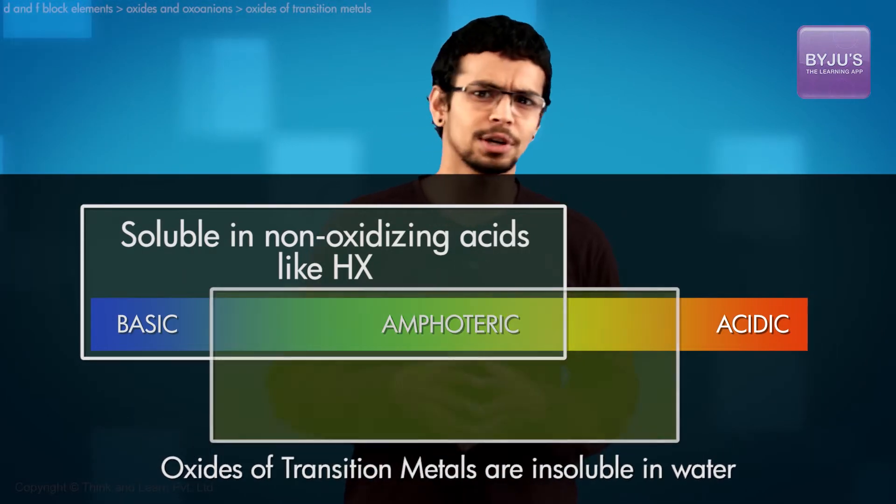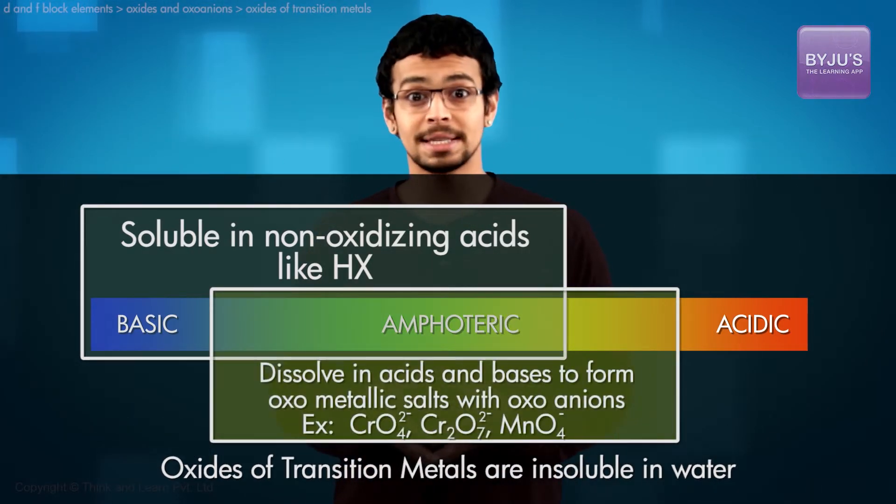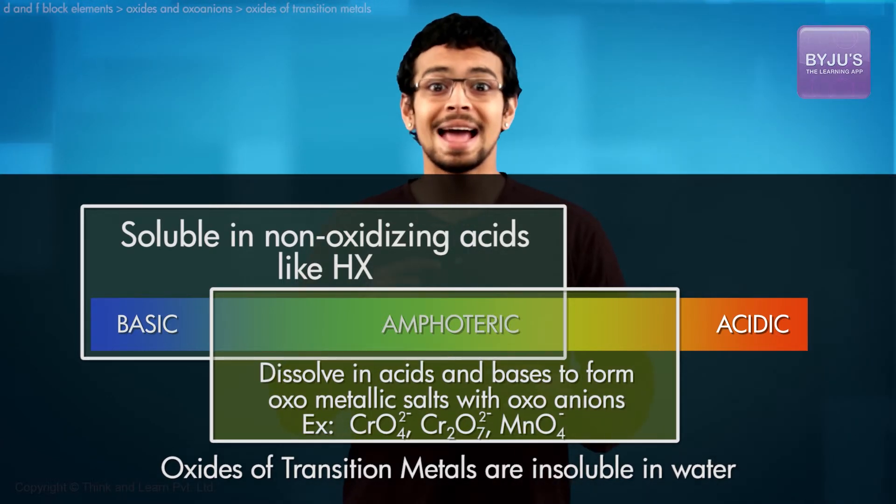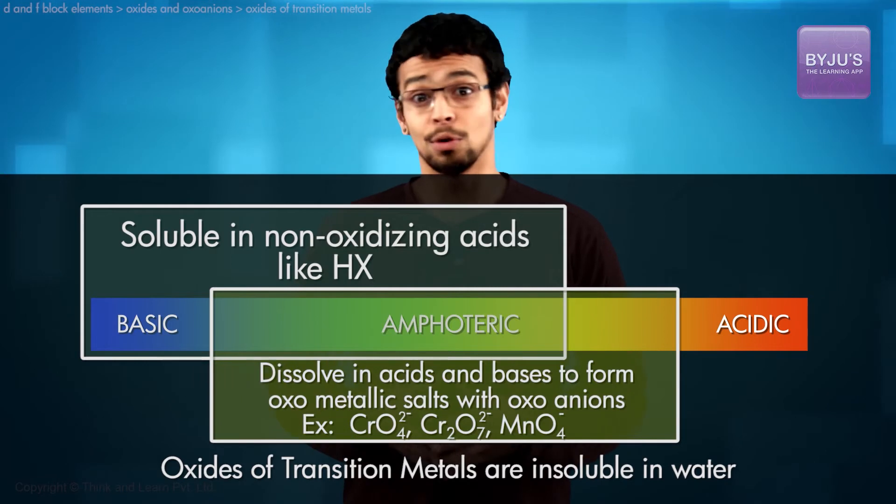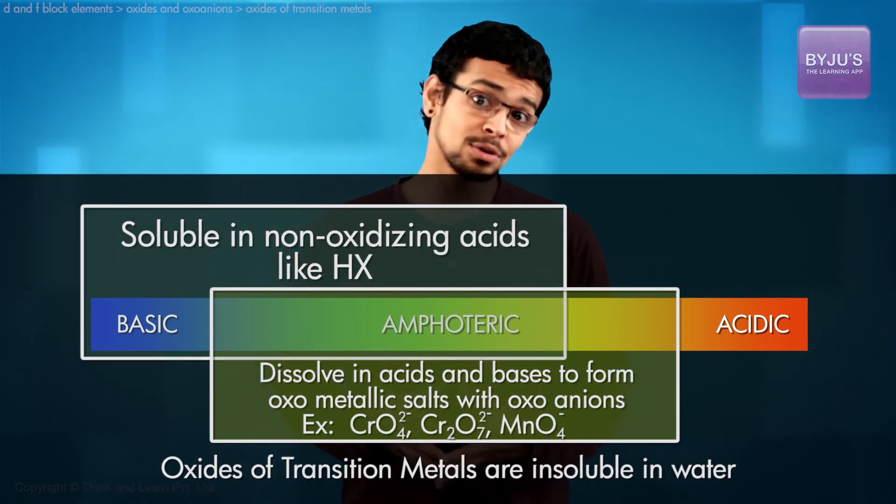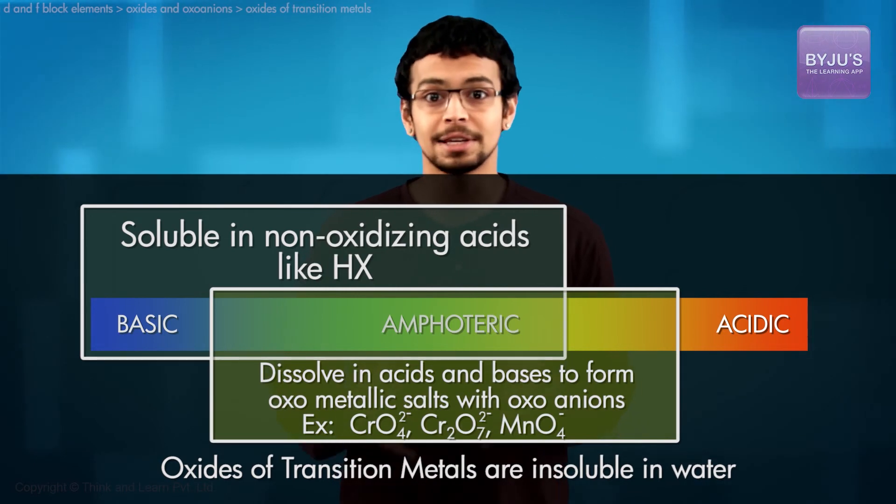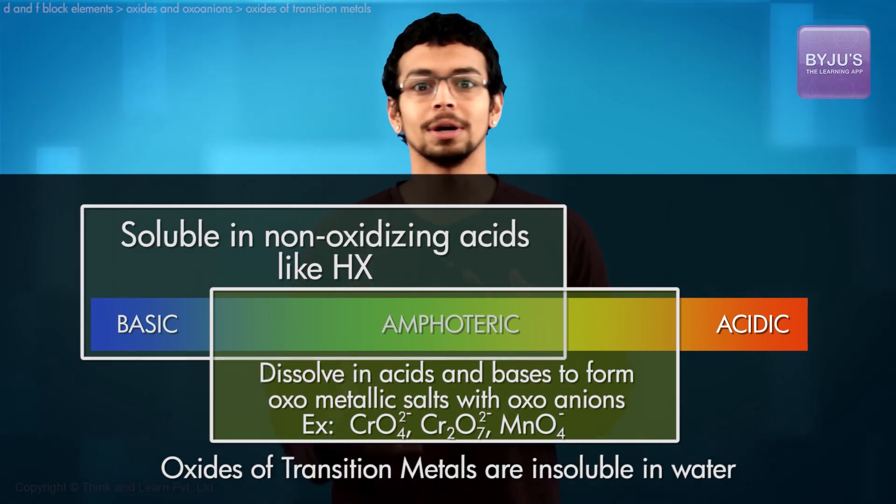Some amphoteric oxides dissolve in acids and bases to form dark colored oxo metallic salts that contain anions like CrO4²⁻, Cr2O7²⁻, MnO4⁻ and others. They have a polymeric structure as against being purely ionic.